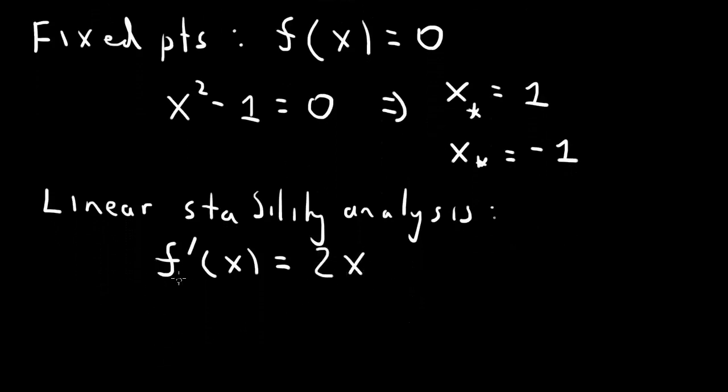So it's the sign of the derivative that determines the stability of these fixed points. So we have f prime of the first fixed point, 1, is 2. And that's greater than 0, so that means the first fixed point is unstable.